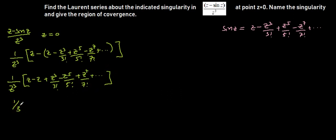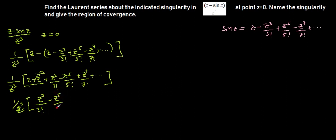So we are going to have 1 over z³ times this expression. The z terms cancel — z minus z gives zero — so we have 1 over z³ times (z³ over 3 factorial minus z⁵ over 5 factorial plus z⁷ over 7 factorial continuing to infinity).